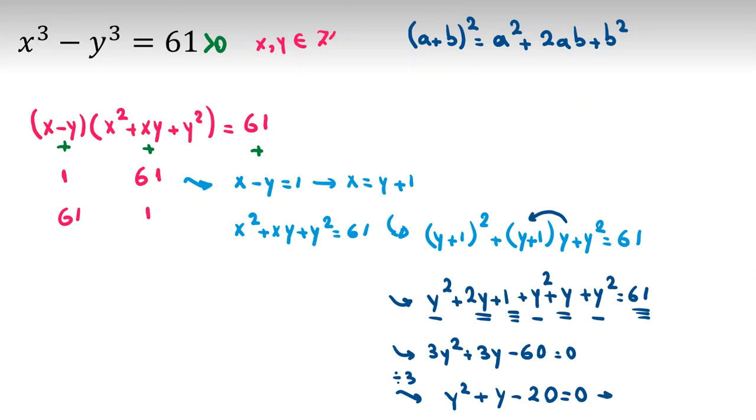You can factorize. Pause the video and try to factorize by yourself. So it will be y plus 5 times y minus 4 equals 0. So from this one, y equals negative 5. From this one, y equals 4. Let's check these two cases.